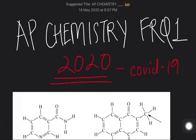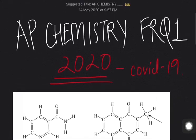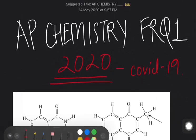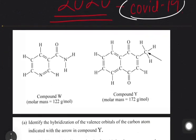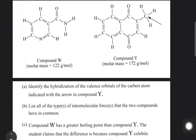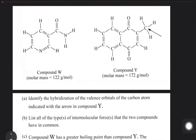In this video we are going to discuss free response question 1 from the 2020 AP exam — the year in which COVID-19 occurred. For those watching this well after 2020, it was not an easy FRQ. There were many tricky questions and we'll go through all of them. Starting with part A, this is free response question 1.